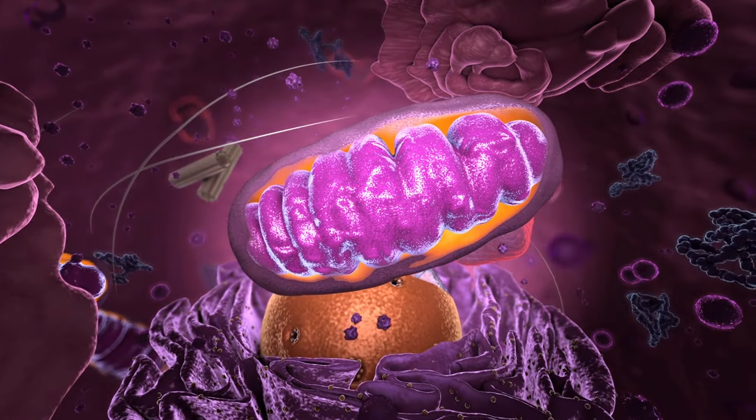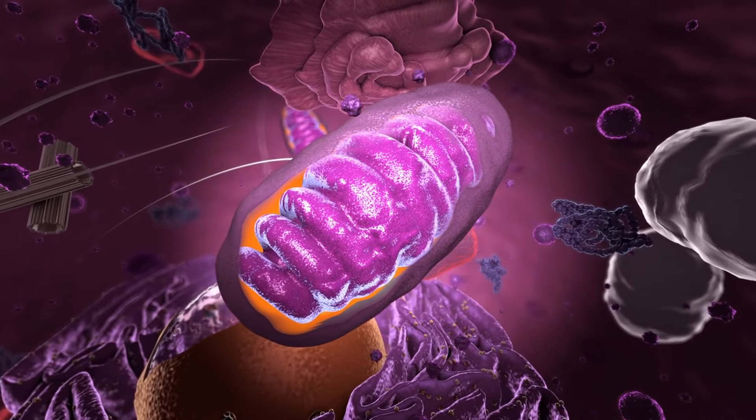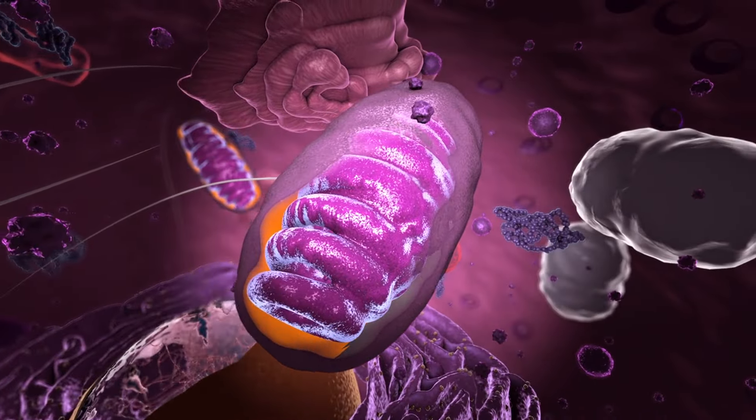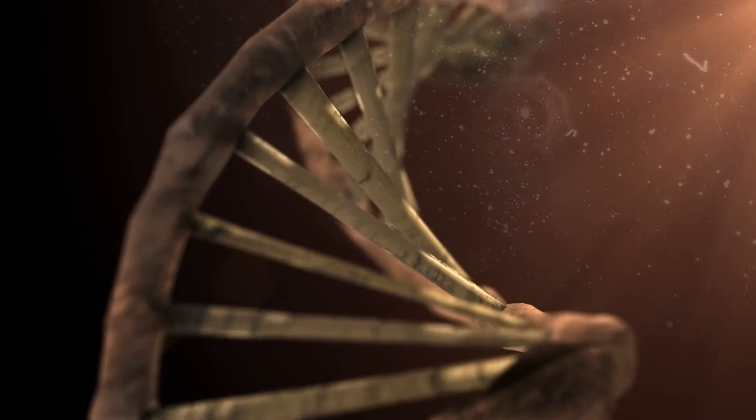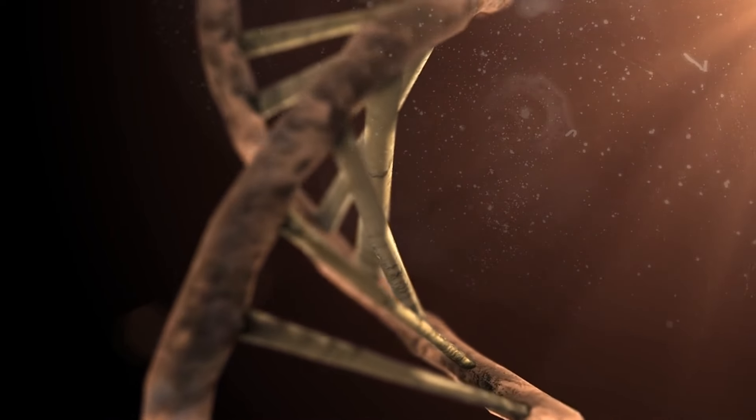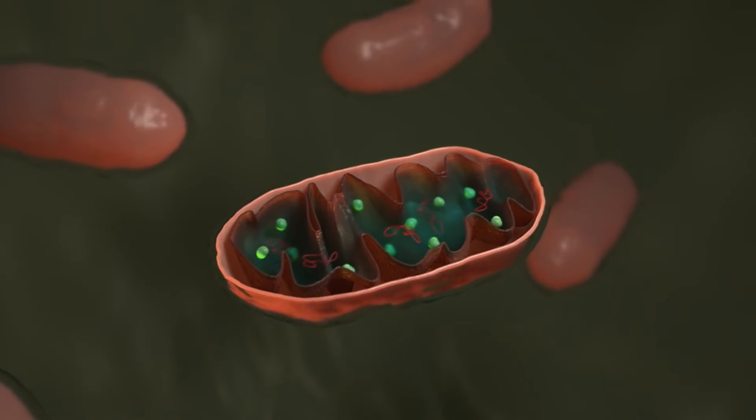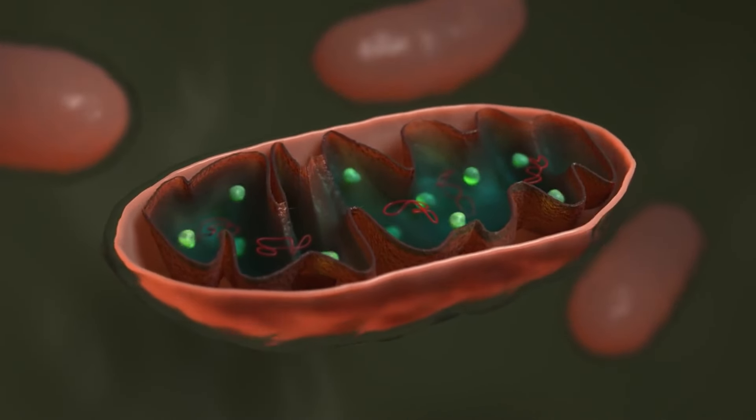Mitochondrial dysfunction contributes to this metabolic shift and affects various cellular processes like signaling pathways that control cell growth and death. For instance, damaged mitochondria can release signals that prevent the normal process of programmed cell death or apoptosis. This allows cancer cells to survive longer than they should, avoiding the usual mechanisms that keep abnormal cells in check.